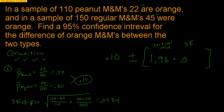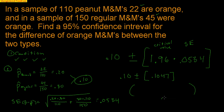Now multiply the critical value by the standard error for the margin of error. For 95% confidence, Z-star is 1.96 — found using invNorm of 0.025. So 1.96 times 0.0534 gives a margin of error of 0.1047. The confidence interval is 0.10 plus or minus 0.1047, giving a lower bound of negative 0.0047 and an upper bound of 0.2047.